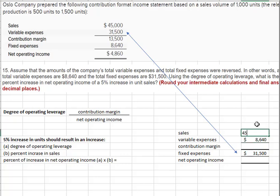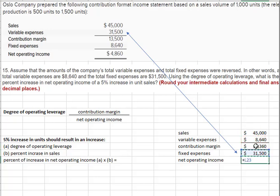Sales is the same as before. Now we calculate our new contribution margin — sales minus variable cost — and our new net operating income, which is contribution margin minus fixed cost. So total net operating income is the same, but the proportion of fixed and variable has been altered.